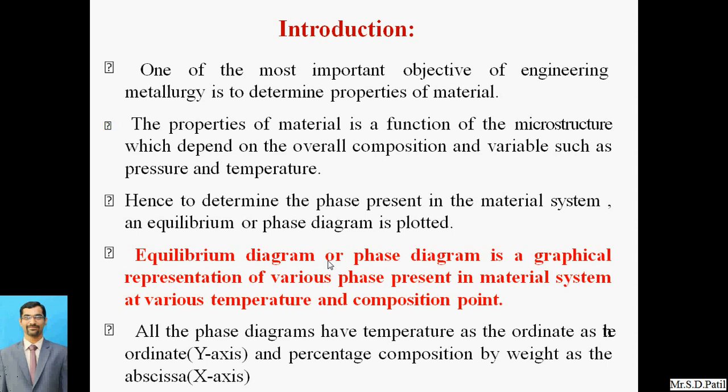An equilibrium diagram or phase diagram is just a graphical representation of various phases present in the material. That phase might be solid, liquid, or anything, plotted at various temperatures and compositions — for example, percentage of carbon, percentage of nickel, percentage of silicon. All phase diagrams have temperature as the ordinate, that is the y-axis, and the percentage of composition by weight as the abscissa, that is the x-axis. The composition is plotted on the x-axis and the temperature on the y-axis.